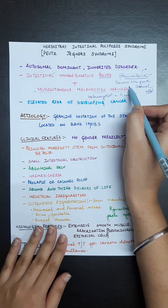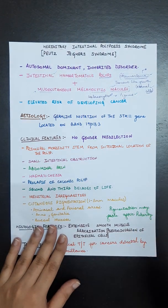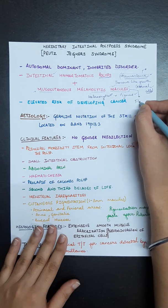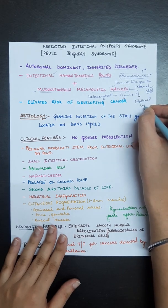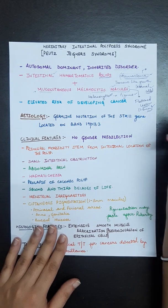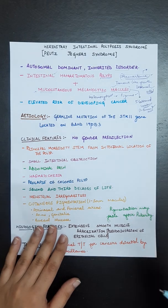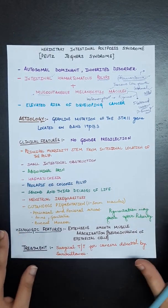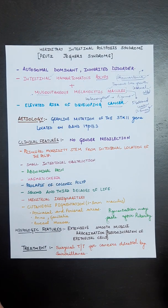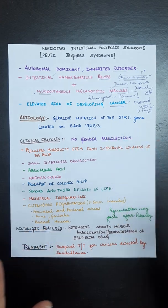There will be a pigmented lesion all over the body in Peutz-Jeghers syndrome. A macule is a flattened lesion which is one to five millimeters in diameter, less than a centimeter, present all over the body. Due to this syndrome, there is an elevated risk of developing cancer.